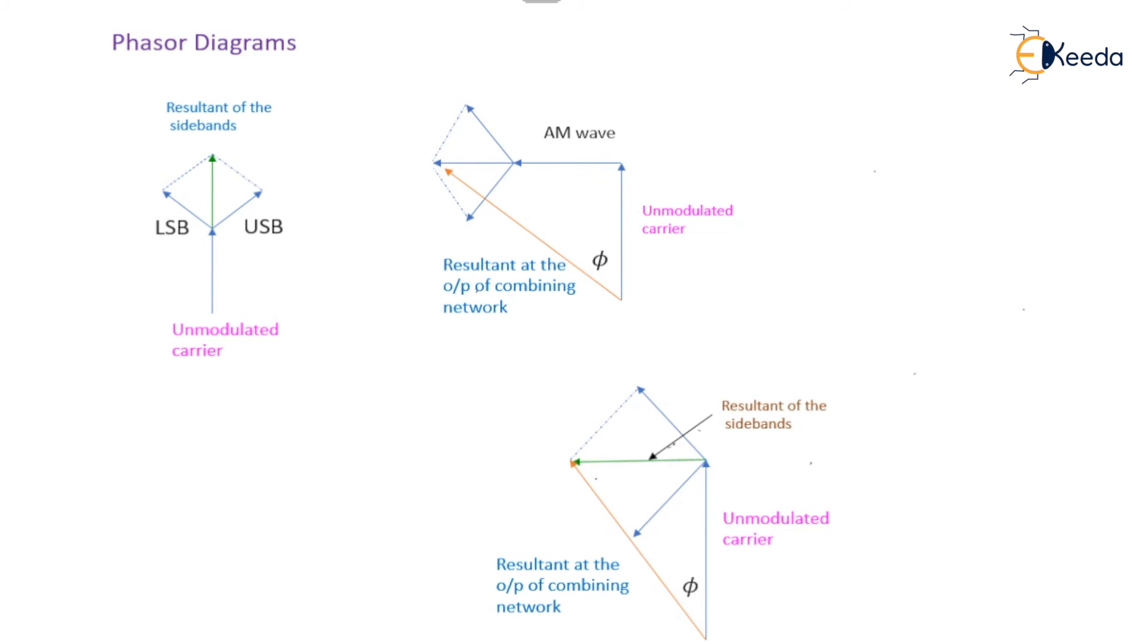we remove the carrier with the help of the balanced modulator. Here, the situation is that the unmodulated carrier is always in phase quadrature with the resultant of the sidebands.